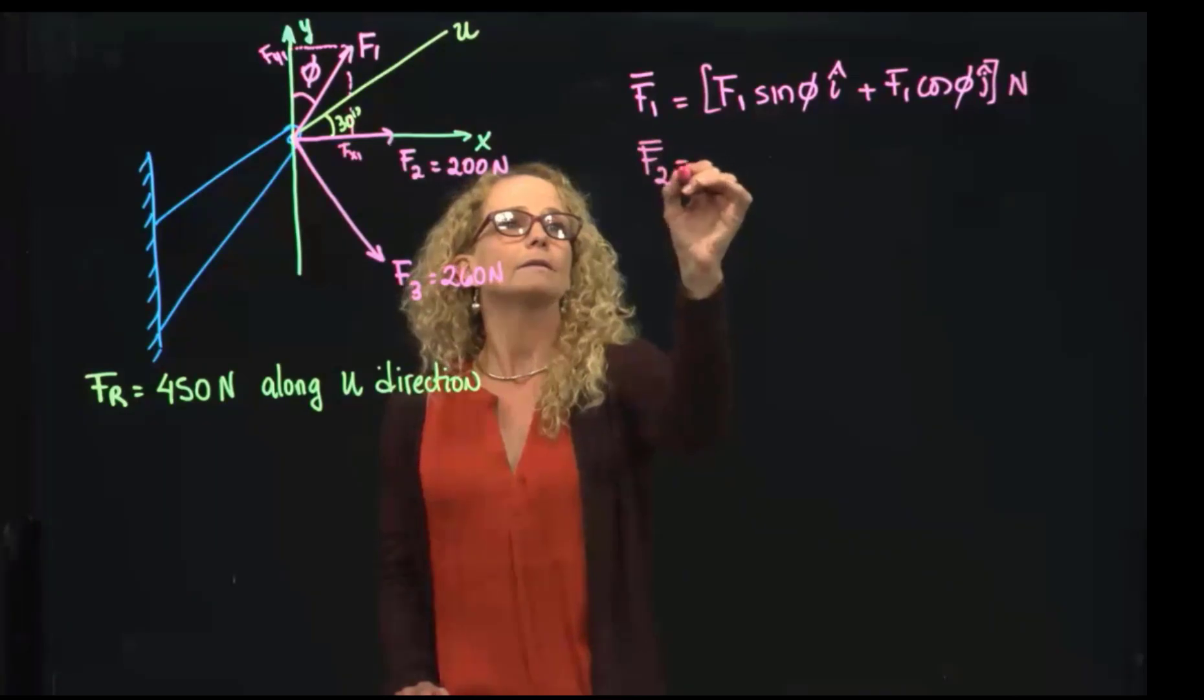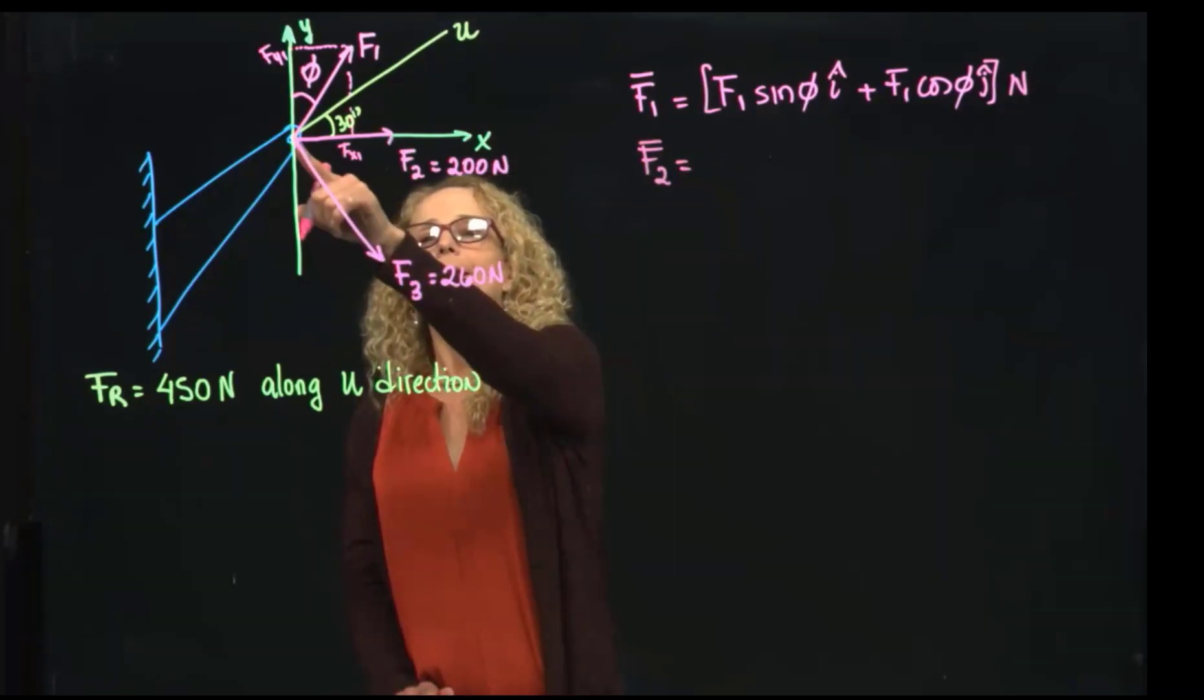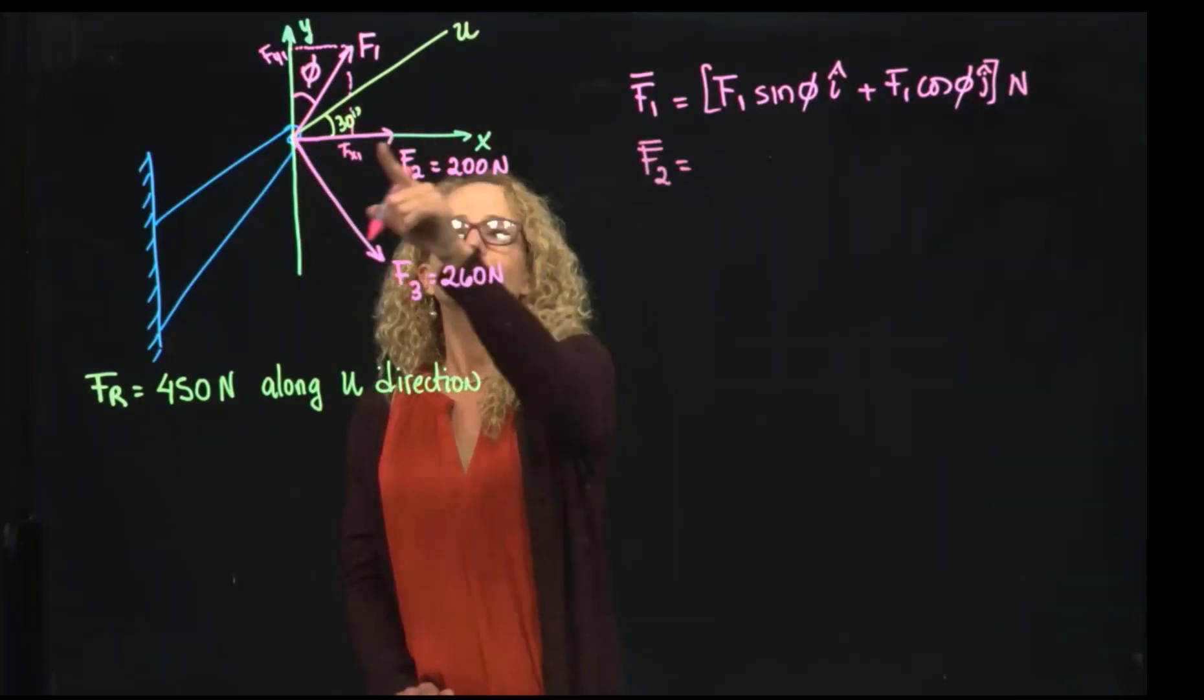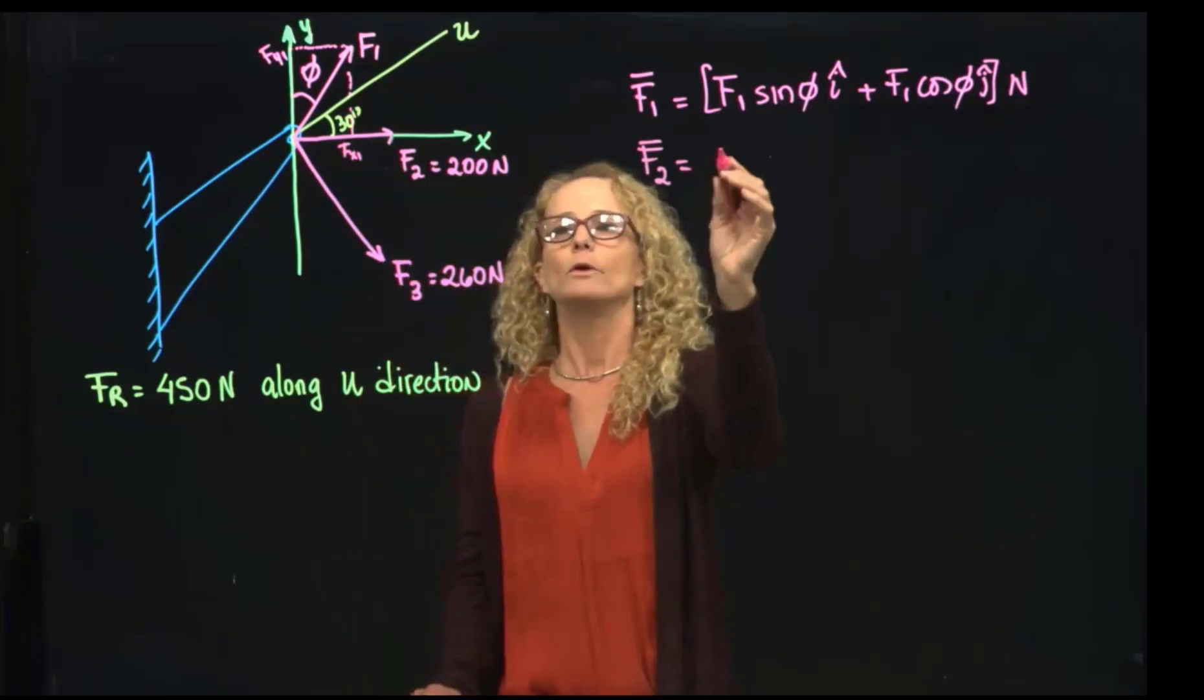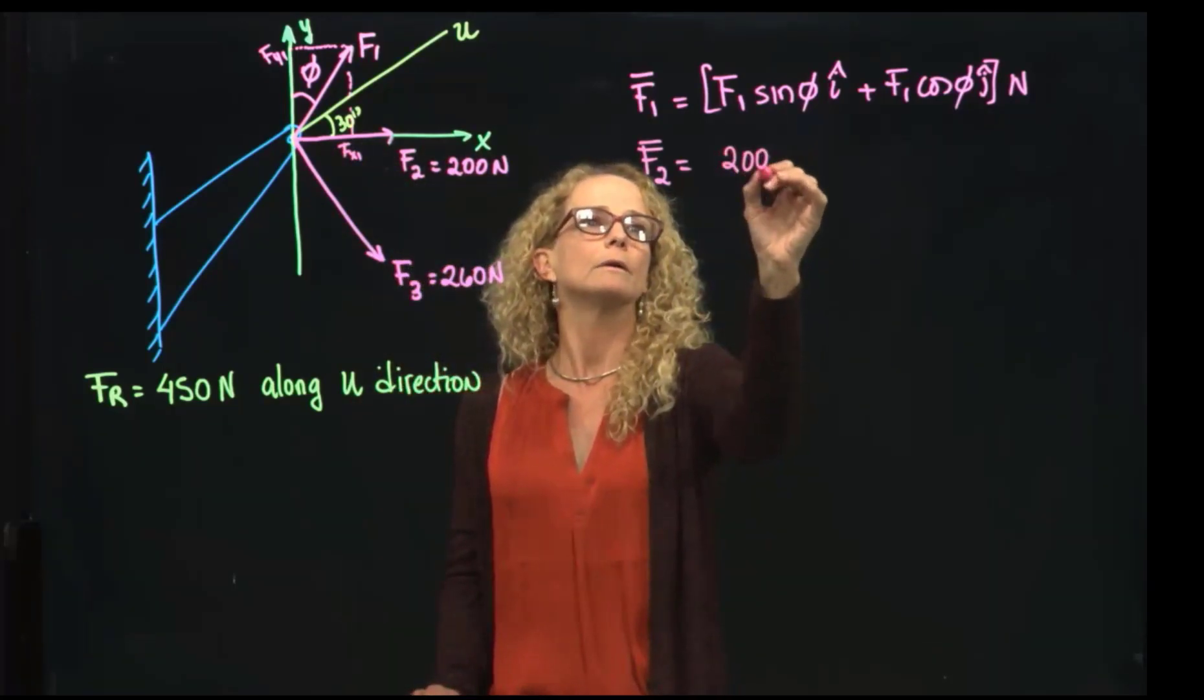F2, as a vector, as you see, is along x-axis, so it does not have y-component. It will only be 200 in I.